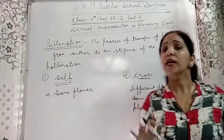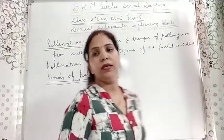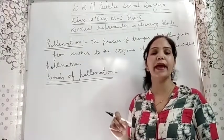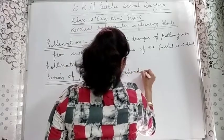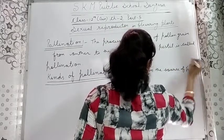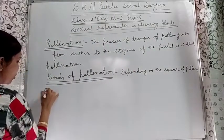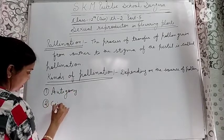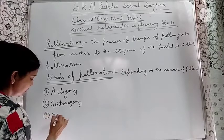In class 12, there are different kinds of pollination. Depending on the source of pollen, pollination can be divided into three types: number one, autogamy; number two, geitonogamy; and number three, xenogamy.